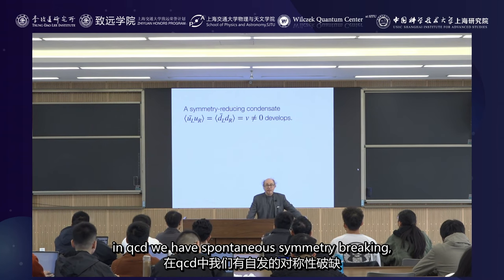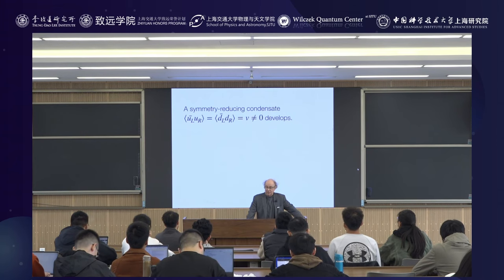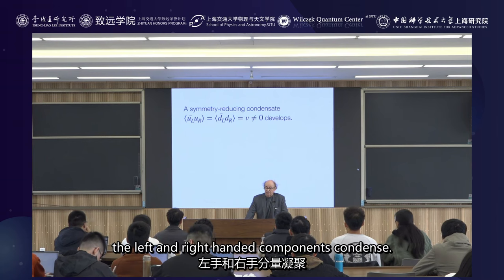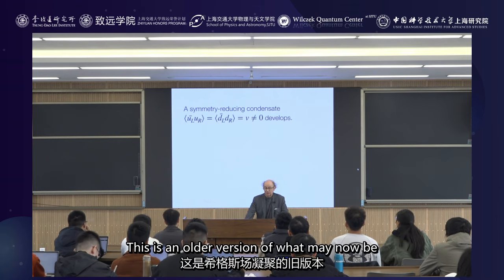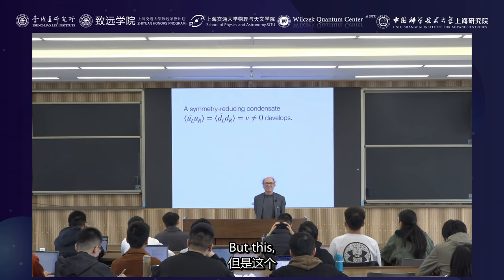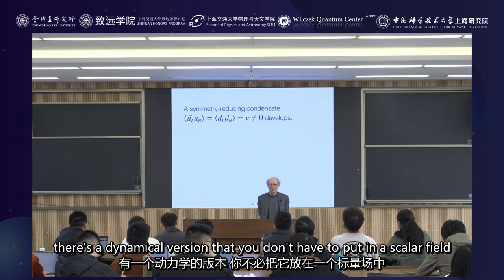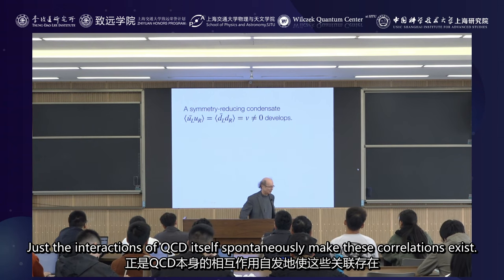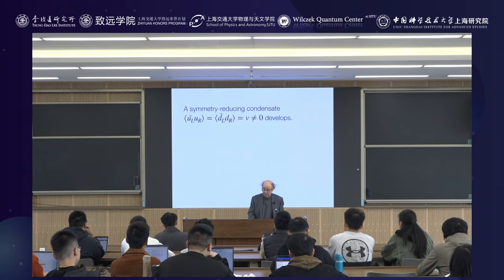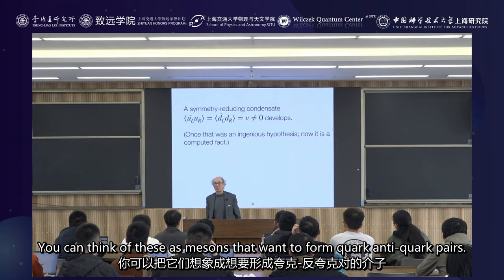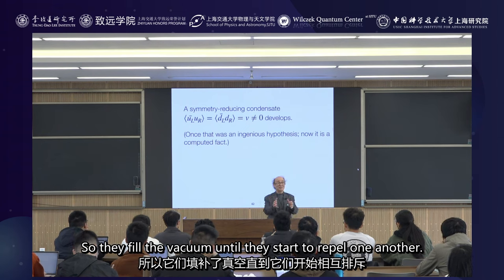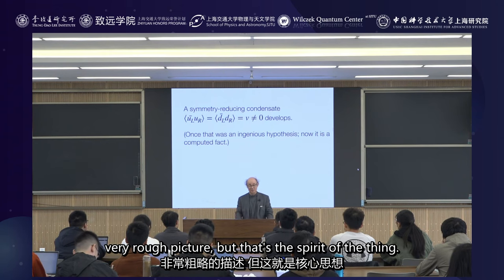In QCD we have spontaneous symmetry breaking, so-called chiral symmetry breaking. This is a dynamical phenomenon that says that in the ground state, in vacuum, the left and right-handed components condense. This is an older version of what may now be more familiar as the Higgs field condensing, but this is a dynamical version — you don't have to put in a scalar field. Just the interactions of QCD itself spontaneously make these correlations exist. You can think of these as mesons, quark-anti-quark pairs, so strongly bound that their mass is negative, so they fill the vacuum until they start to repel one another.